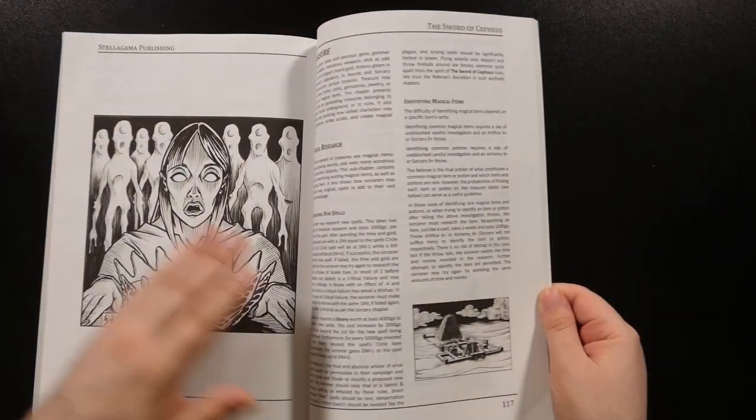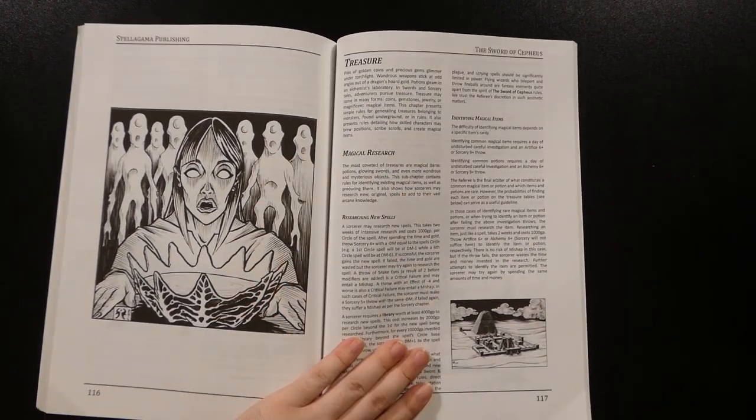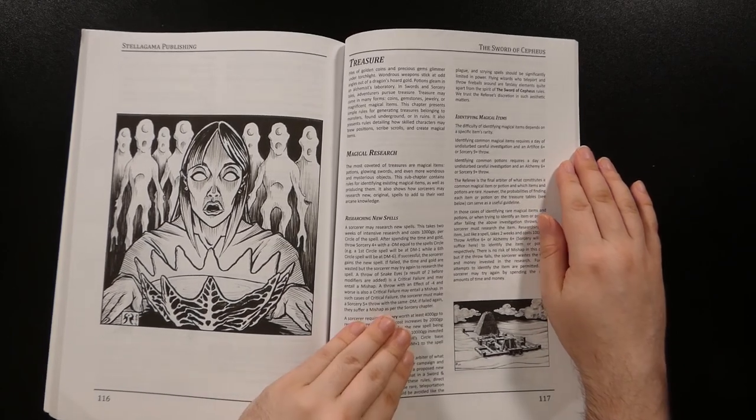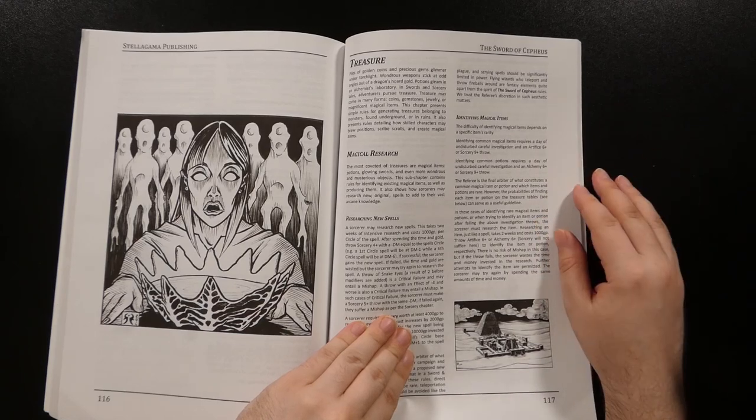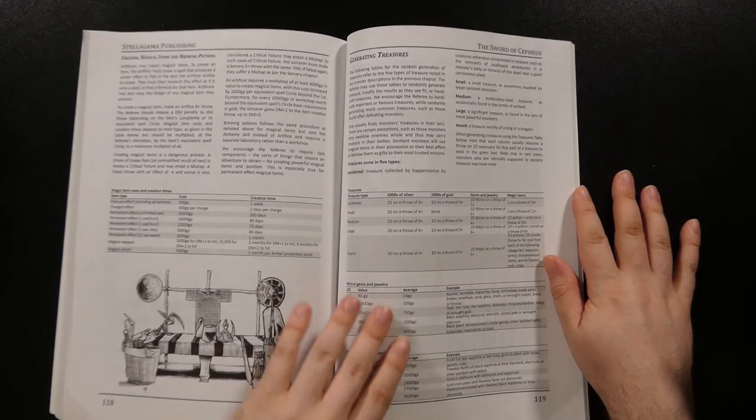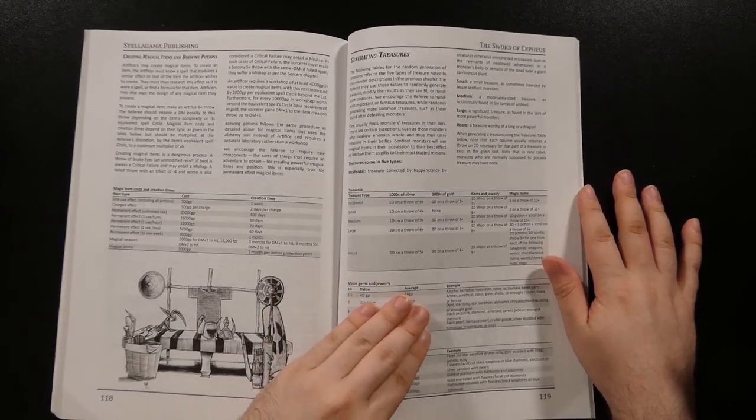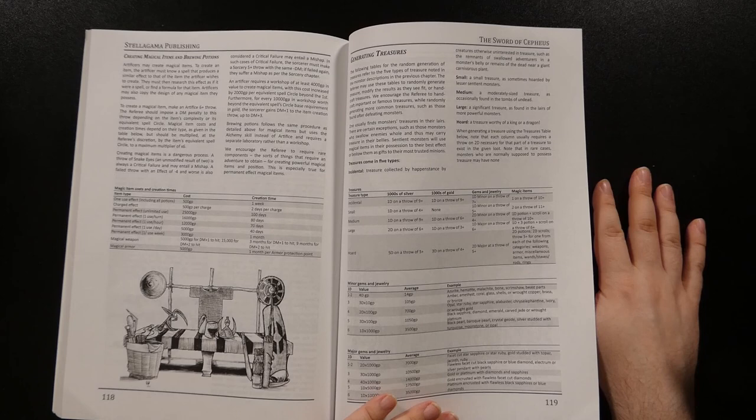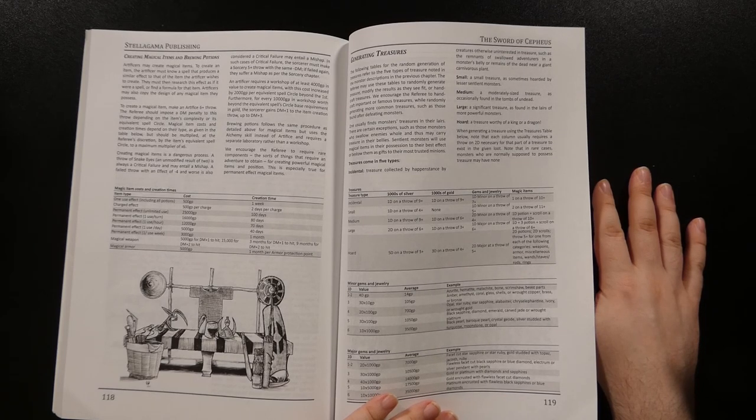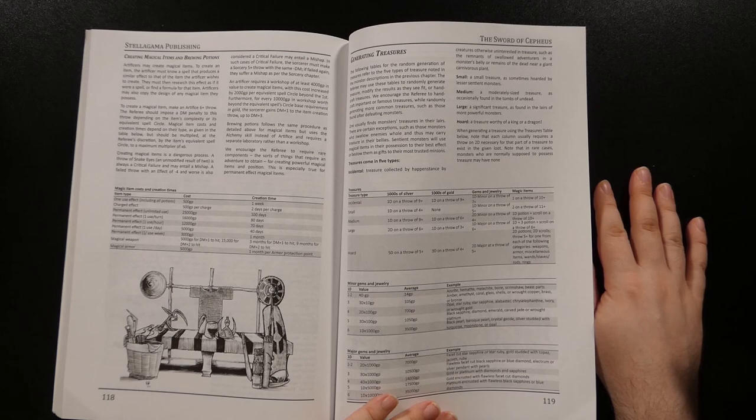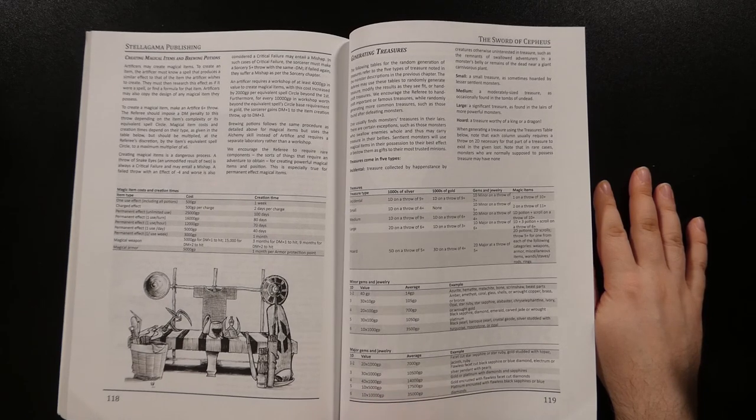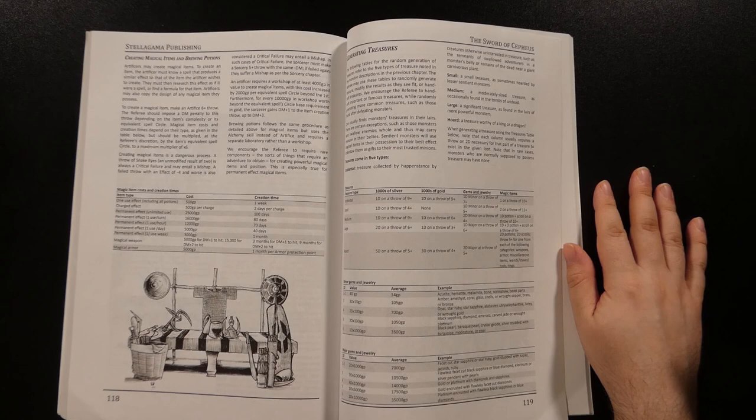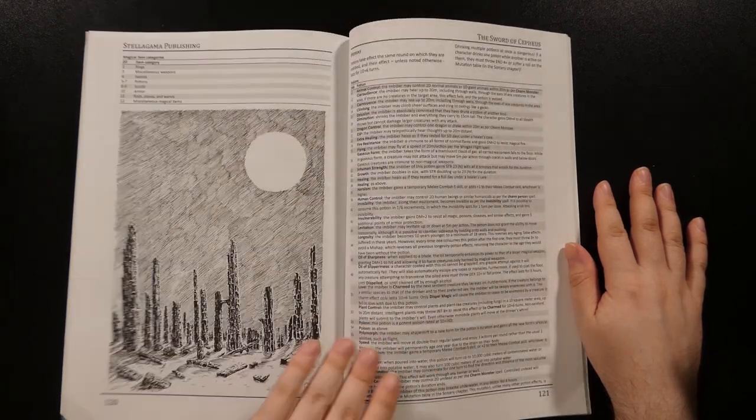The treasure chapter starts off not with actual treasure, but with rules for magical research, offering ways for sorcerer style characters to create new spells, as well as rules for identifying magic items themselves, which I suppose makes sense. Then there's the set of rules for creating magic items and potions, which, while brief, still offer more of a guideline than I see in some more typical OSR systems. The rules for generating treasure hoards then follow with tables to create treasure based on type. The type in this case is the general size of the treasure rather than an actual numerical or alphabet type. They range from a proper full-on horde all the way down to just incidental stuff that you might find in someone's pocket.